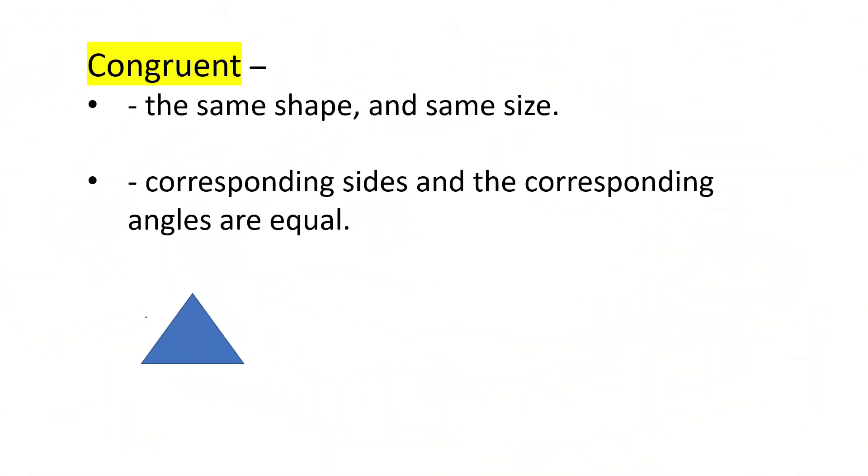Congruency means you have the same shape and the same size. In congruency, all the corresponding sides and the corresponding angles are equal. So both the blue triangle here and the orange triangle are the same shape and the same size.